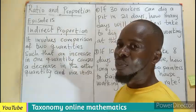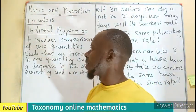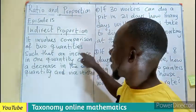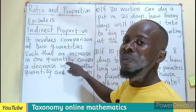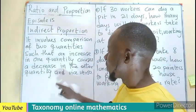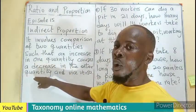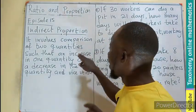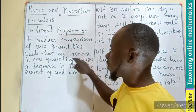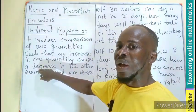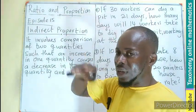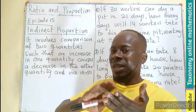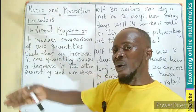Indirect proportion involves the comparison between two quantities such that an increase in one quantity causes a decrease in the other quantity, and vice versa. Simply put, a decrease in the first quantity will cause an increase in the other quantity — as one is increasing, the other is decreasing, and as one is decreasing, the other is increasing.